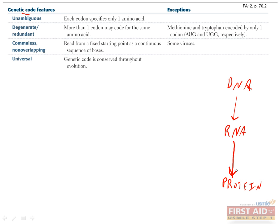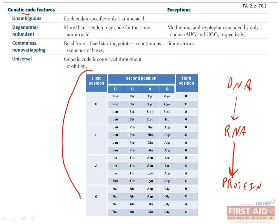The genetic code is used to translate RNA into protein. This is a codon table, and it shows that each amino acid is encoded by a set of three nucleotides, which is called a codon.